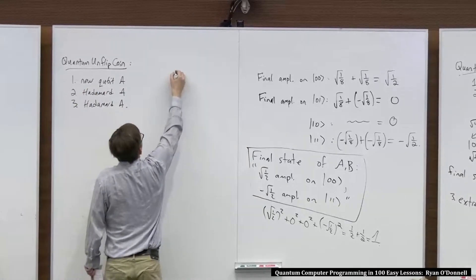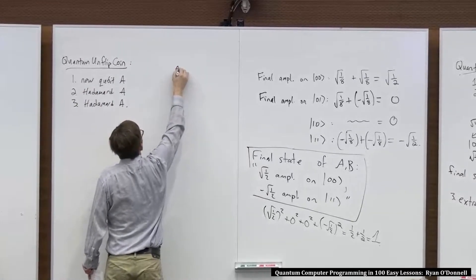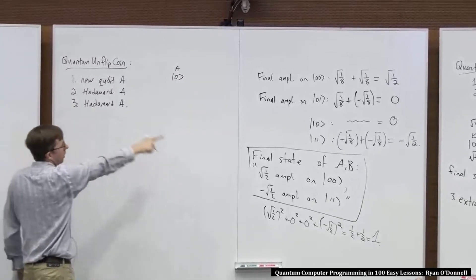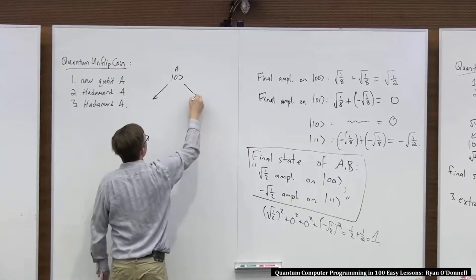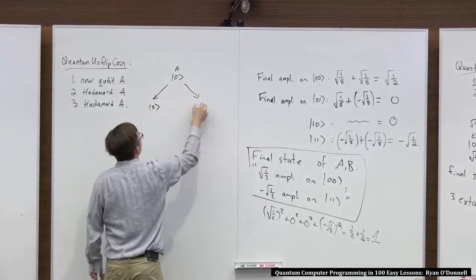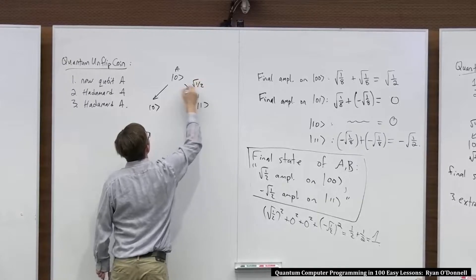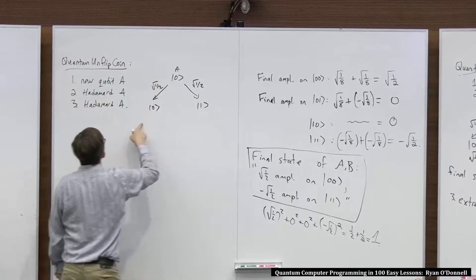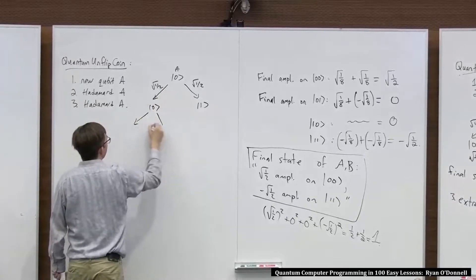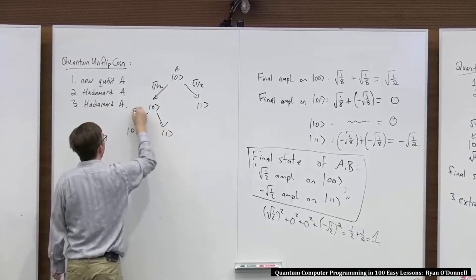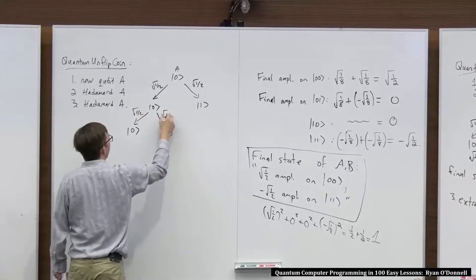New qubit A, we start out at zero, this is A. And then Hadamard A, so it's going to look exactly like this to start. We could have just continued that tree over there, but let's redraw it. Root a half, root a half. But now we do another Hadamard, so in this world where it's zero, it's going to look like a copy of this. Zero, one, root a half, root a half.